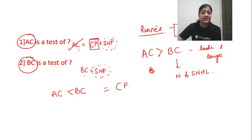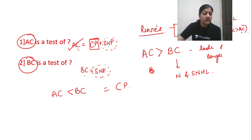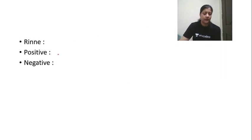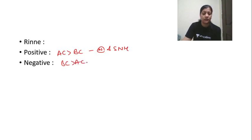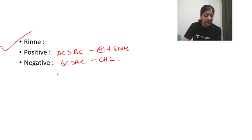Rinne positive means AC greater than BC, seen in normal hearing as well as sensorineural hearing loss. Rinne negative is seen in conductive hearing loss where BC is greater than AC. So: Rinne positive — AC greater than BC — seen in normal and SNHL. Rinne negative — seen in conductive hearing loss.